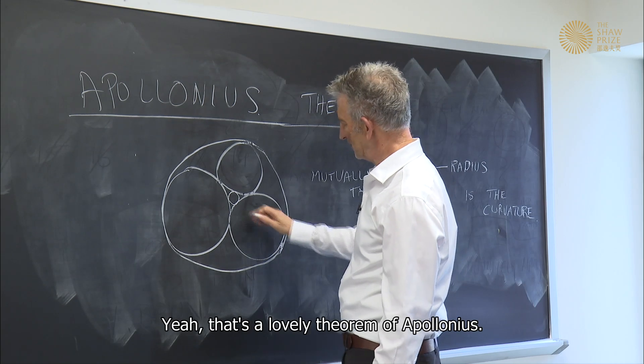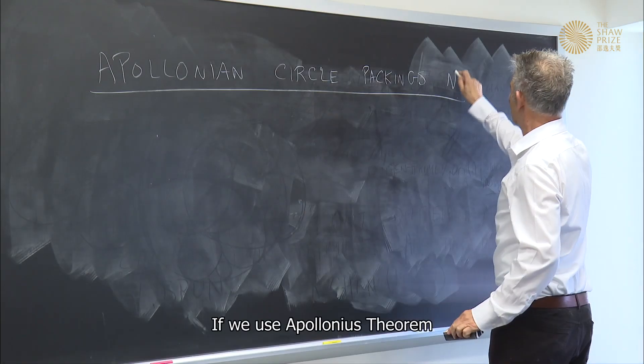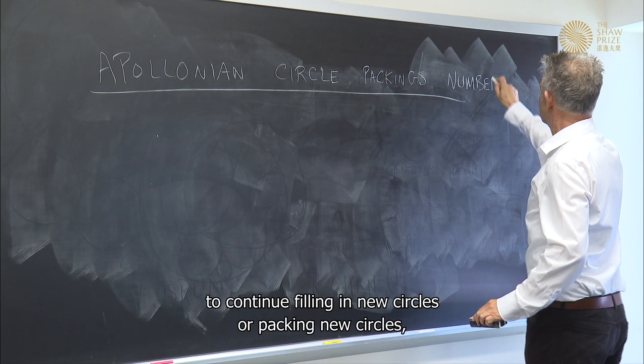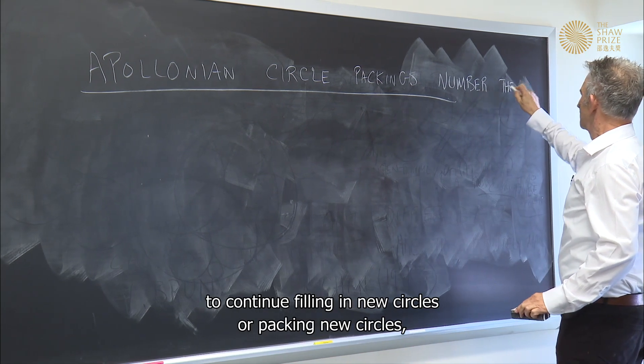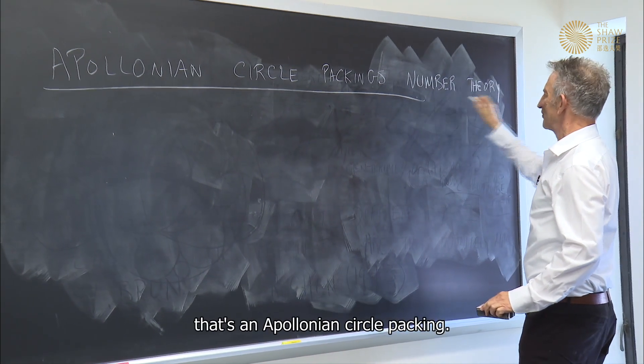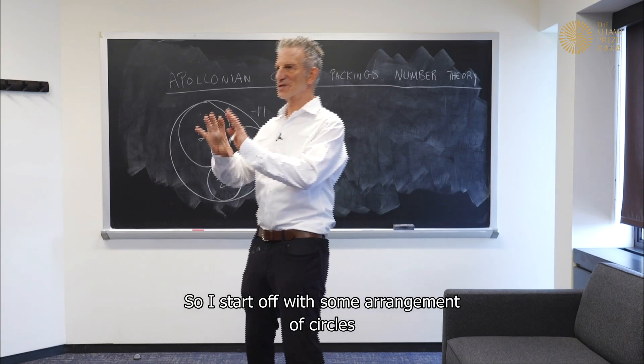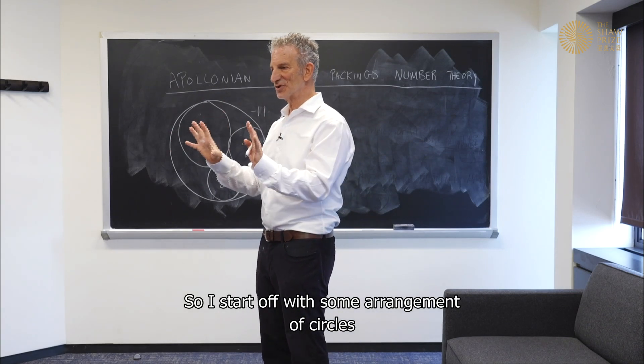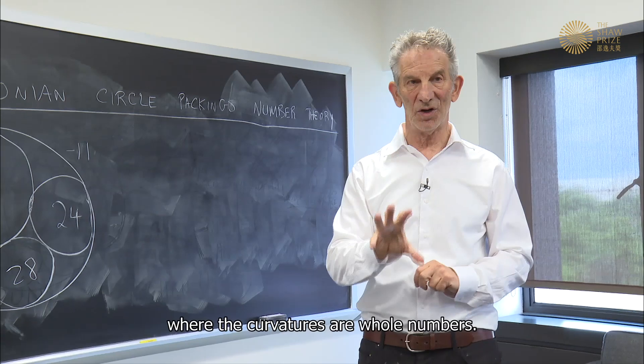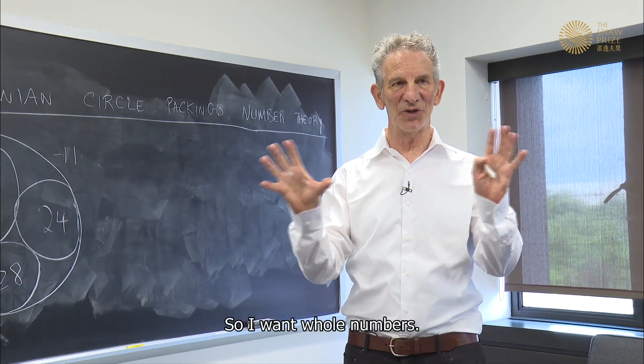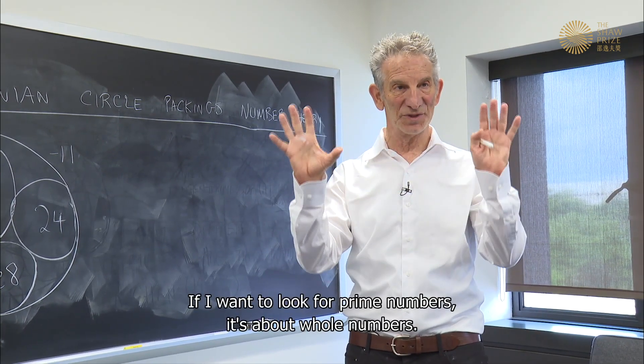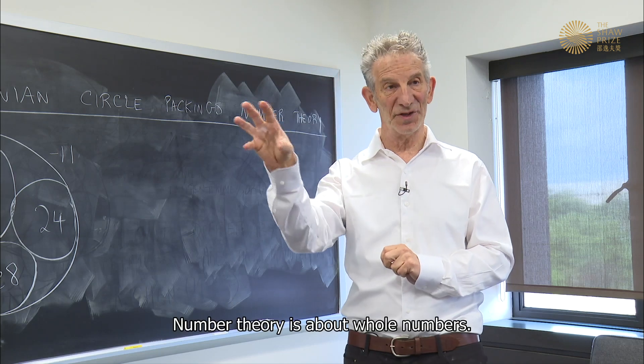Then his theorem says there are exactly two circles in the world that are tangent to all three. That's a lovely theorem of Apollonius. If we use Apollonius theorem to continue filling in new circles or packing new circles, that's an Apollonian circle packing. So I start off with some arrangement of circles where the curvatures are whole numbers. If I want to look for prime numbers, it's about whole numbers. Number theory is about whole numbers.